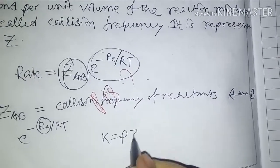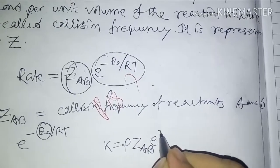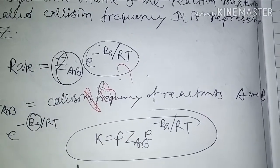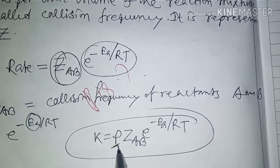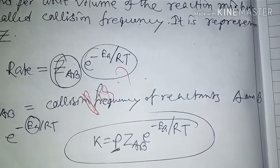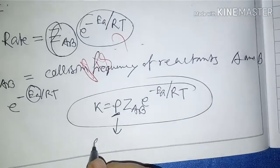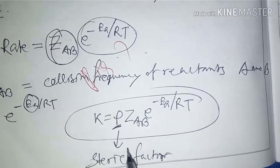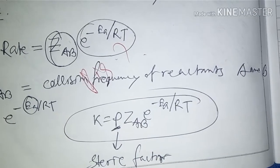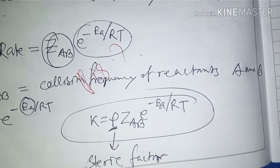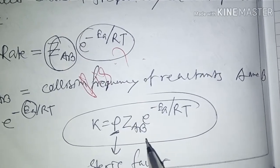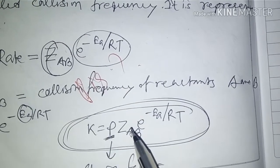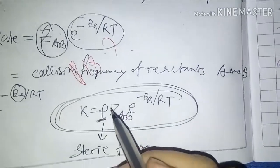Another equation from collision theory is: K = P × Z_AB × e^(-Ea/RT). Here, P is called the steric factor. The steric factor refers to the orientation of molecules during collision — only properly oriented collisions contribute to effective collisions.